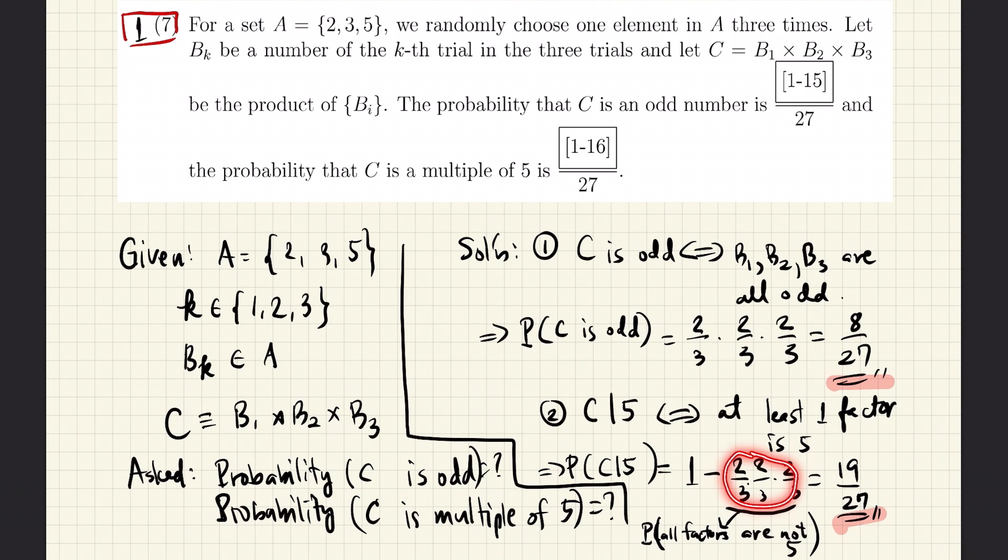And therefore, this product here is the probability that C is not a multiple of 5. And therefore, the probability that C is in fact a multiple of 5 is 1 minus this probability, and that gives us 19 over 27.